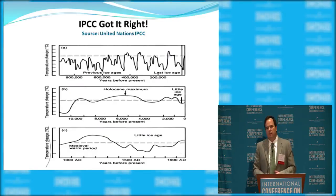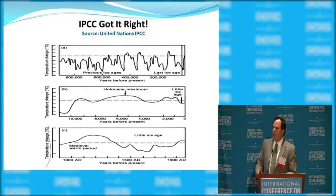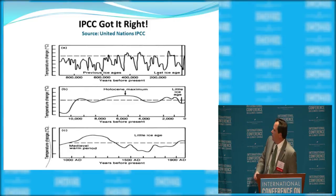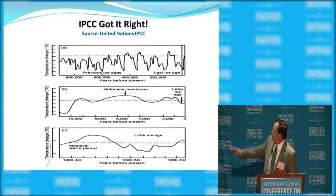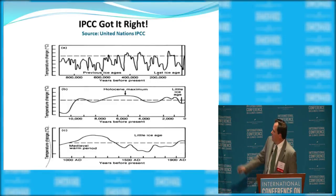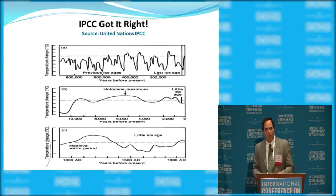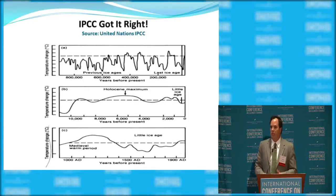The IPCC — for as much heat as we give them, and justifiably — they do occasionally get some things right. This is one they got right in their very first report. We see temperature histories very similar to what I just showed. The two most important are in the middle and the bottom, where again we see current temperatures on the far right. Over the past 10,000 years and the past 1,000 years, temperatures today still are not at historically high levels. We can still warm a significant amount before reaching temperatures that prevailed in the past, in which human civilization developed and thrived.